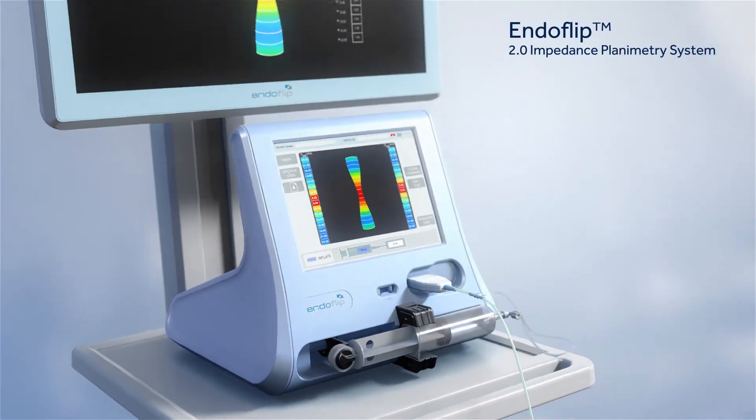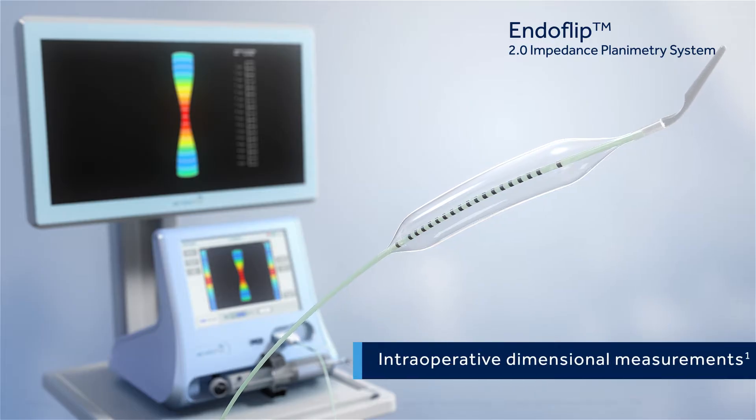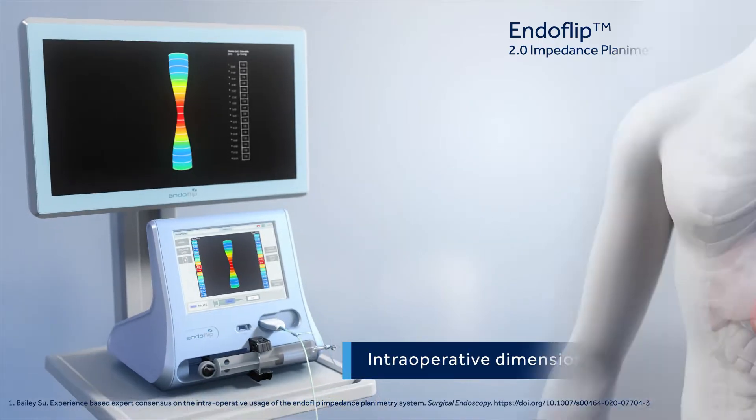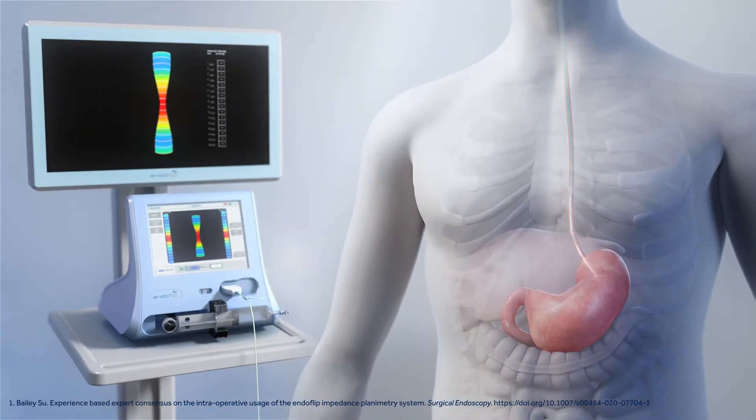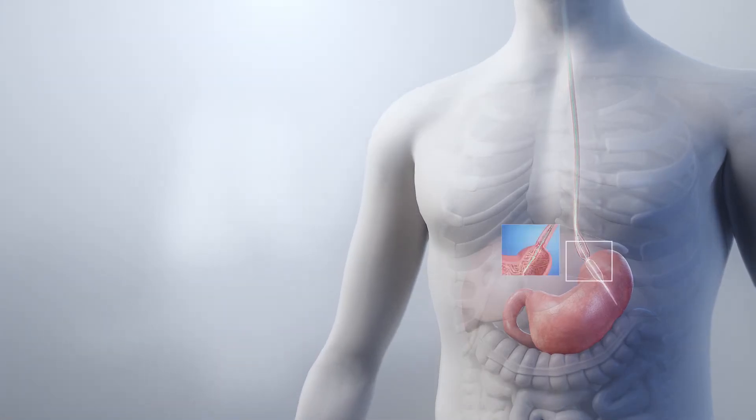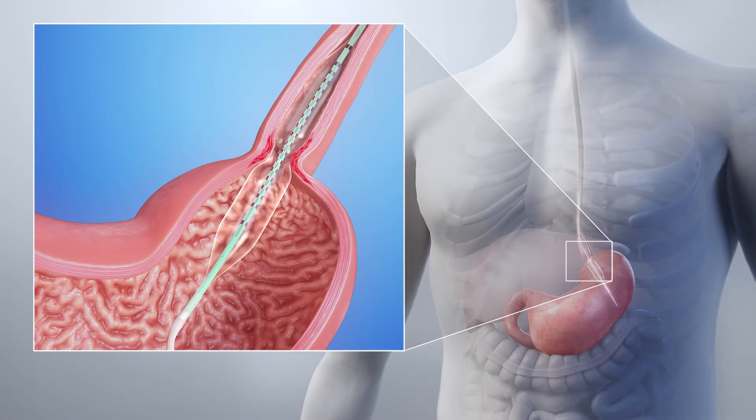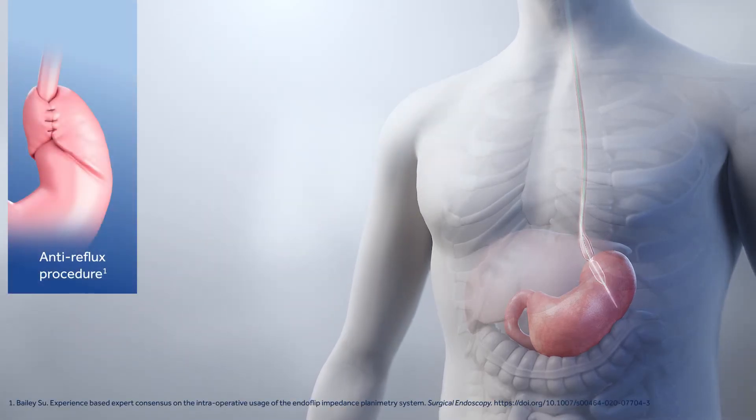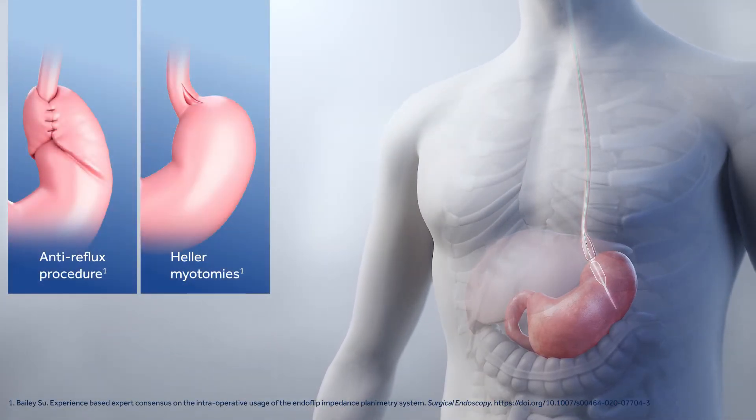The EndoFLIP impedance planimetry system produces intraoperative dimensional measurements that can be used to assess fundoplication and other endoscopic foregut procedures. It provides real-time assessment of the lower esophageal sphincter, which may also aid during anti-reflux procedures, Heller myotomies, and per oral endoscopic myotomies.